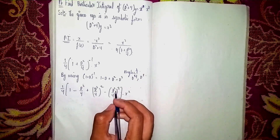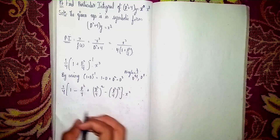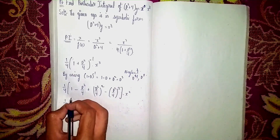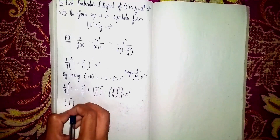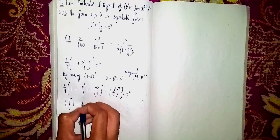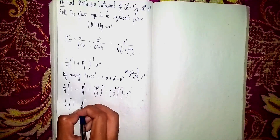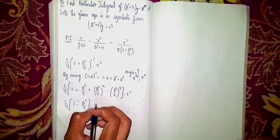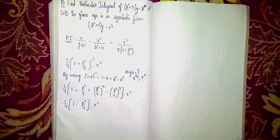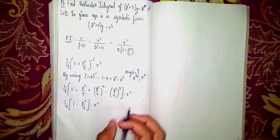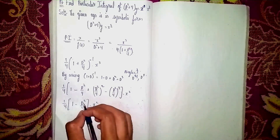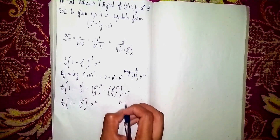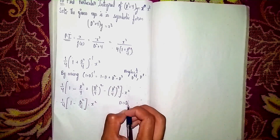So what remains is (1/4) × [1 − D²/4] × x³. Now always remember: D means differentiation with respect to x, i.e., d/dx.